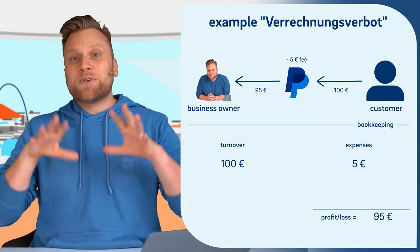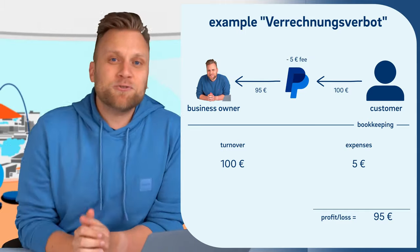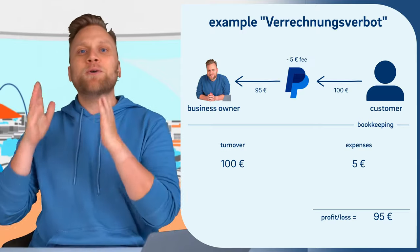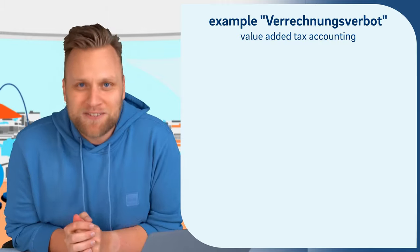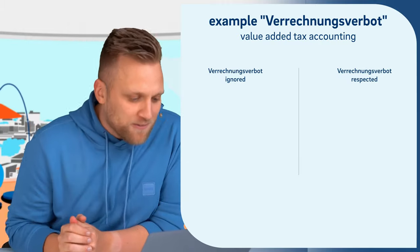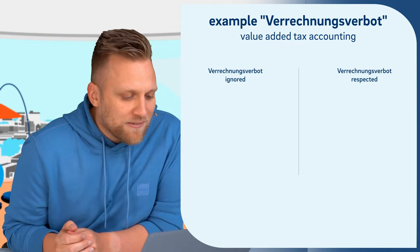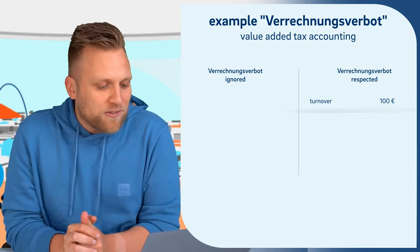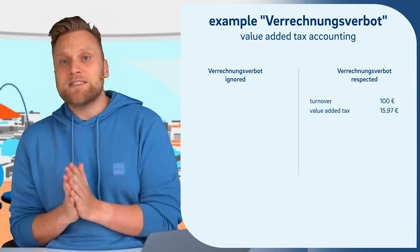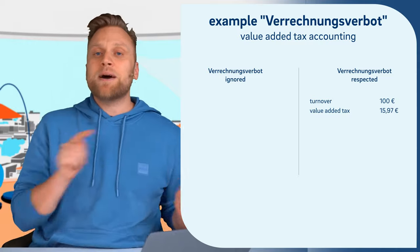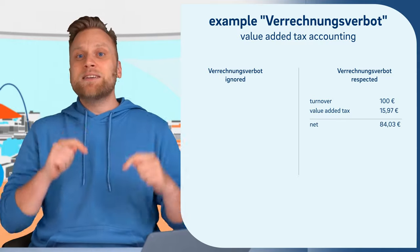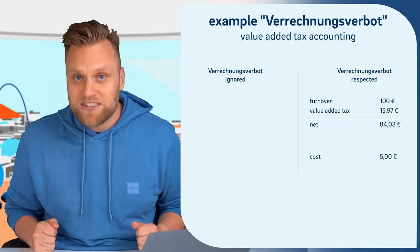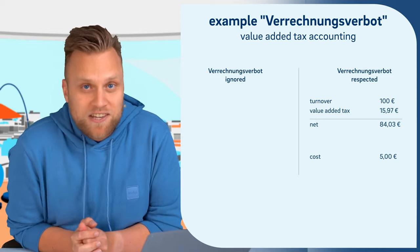However, it is absolutely crucial that you separate these, and this is for two reasons. The first reason is the calculation of value-added tax, because you pay the tax on the $100 and not just on the $95. If you receive $100 gross, the value-added tax amount from that is $15.97. This means the net amount — which is actually your net revenue — would be $84.03 if the gross amount is $100. On the cost side, you then have the $5 PayPal fees. Since PayPal is not based in Germany, these fees are exempt from value-added tax, meaning on the cost side you do not have the option to claim input tax, because PayPal simply does not show any value-added tax.